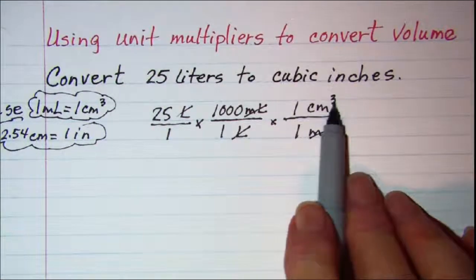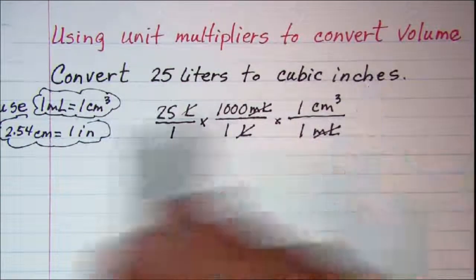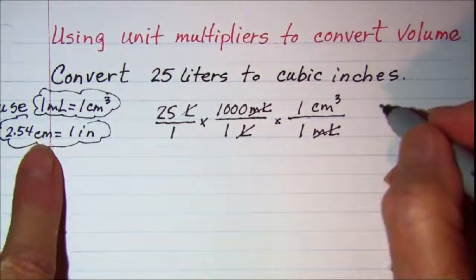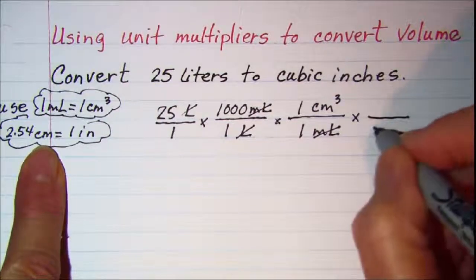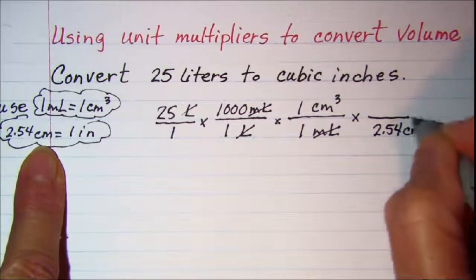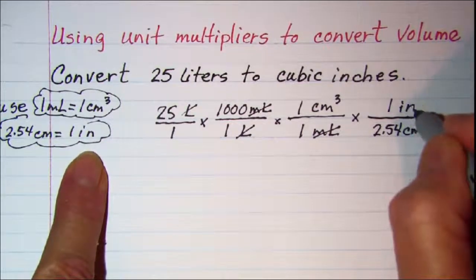Now I am in cubic centimeters. I want to go to cubic inches so I will use this equivalence. My centimeters will be in the bottom so I have 2.54 centimeters and 1 inch in my unit multiplier.